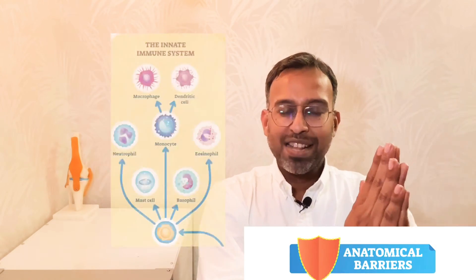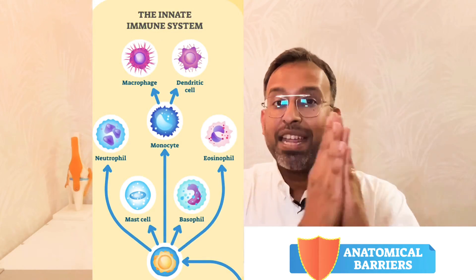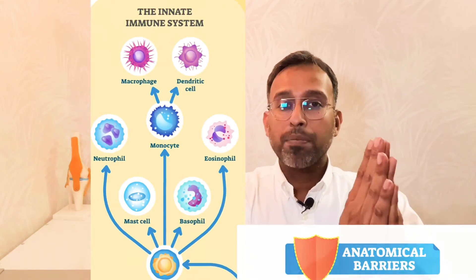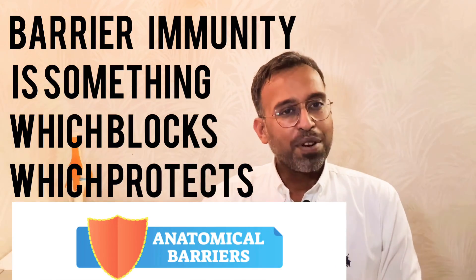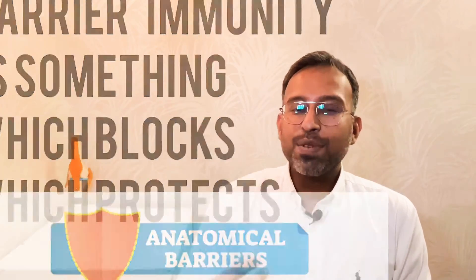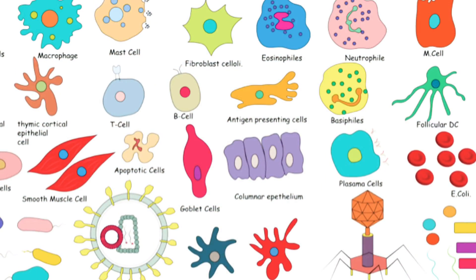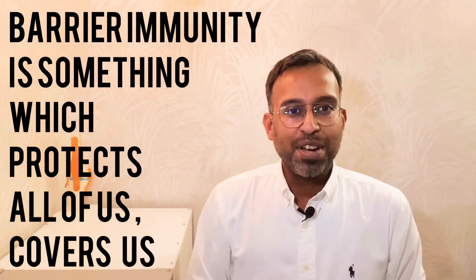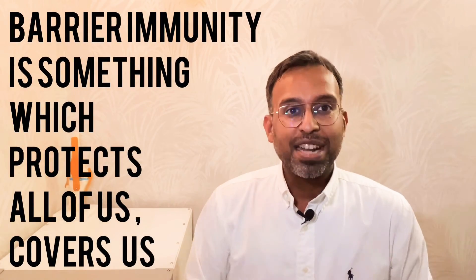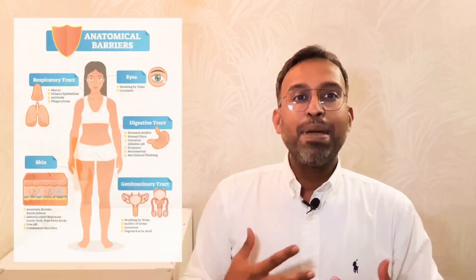I'm going to break down innate immunity into two parts. One is barrier immunity and the second one is cellular immunity. Barrier immunity is something which blocks and protects. Cellular immunity refers to the cells inside our blood which come to fight when barrier immunity is broken.